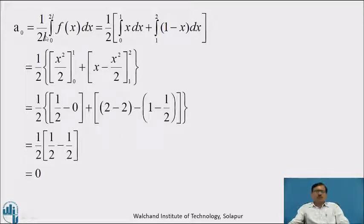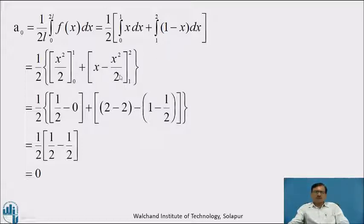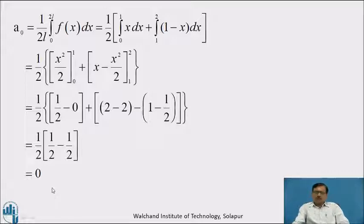Now a₀ = (1/2L) ∫₀²ᴸ f(x) dx = ½ [ ∫₀¹ x dx + ∫₁² (1−x) dx ]. Integrating: = ½ [ x²/2 |₀¹ + (x − x²/2) |₁² ] = ½ [ ½ − 0 + (2 − 2) − (1 − ½) ] = ½ [ ½ + 0 − ½ ] = 0. Therefore a₀ = 0.